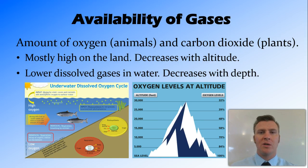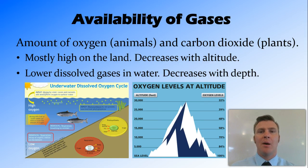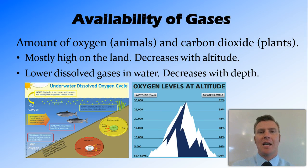In aquatic biomes, the availability of gases is much less, though there are dissolved gases — oxygen and carbon dioxide — inside the water. However, this decreases with depth, because gases enter the water through splashing of rapids and waves. As it gets deeper, the water isn't moving around as much, isn't in contact with the air, and there aren't as many gases available.